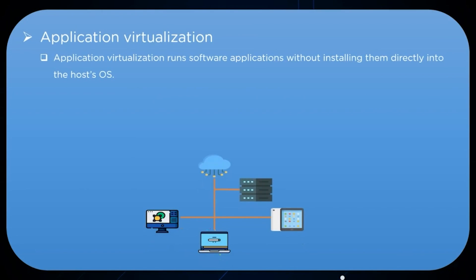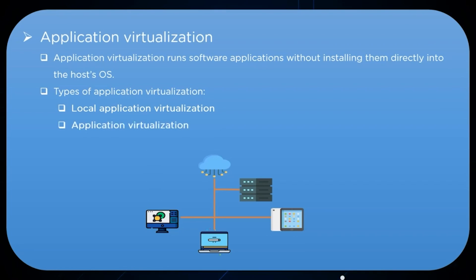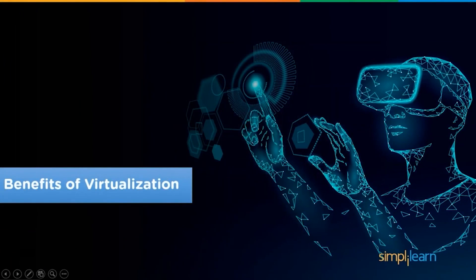In application virtualization, applications run directly without needing to be installed on the system, as they run in a virtual environment. There are three types: local application virtualization, where the application runs on the host device but in a separate virtual environment; application streaming, where the application resides on a server and sends components to the host device as needed; and server-based application virtualization, where the application runs entirely on the server side and sends only the interface to the client system.